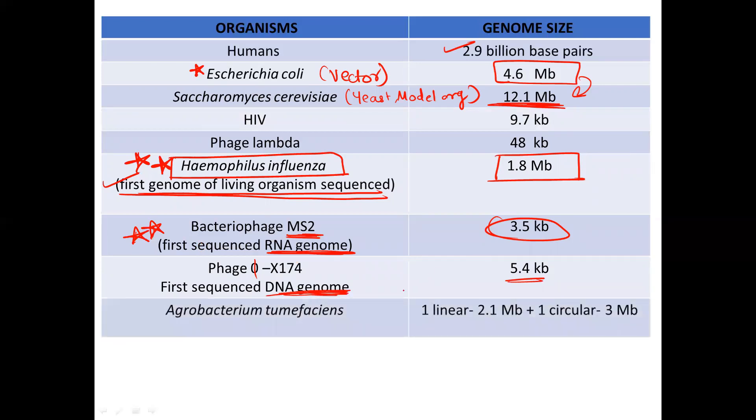Then you have Agrobacterium tumefaciens. I added it because it's a very important vector because of the presence of the Ti plasmid. Basically what does it cause? Yes, the crown gall in plants. So important vector and it has two basically genomes, one linear which is 2.1 MB and one circular of 3 MB.